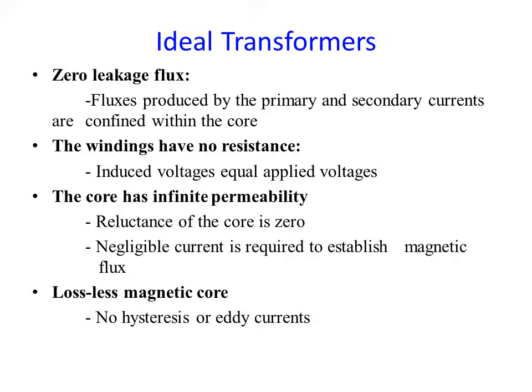In the core type construction, the flux has a single path — the flux flows in the core. But in the shell type, the flux has two paths. At the center it is twice the flux of the two limbs, so if the center flux is φ, each outer limb carries φ/2.